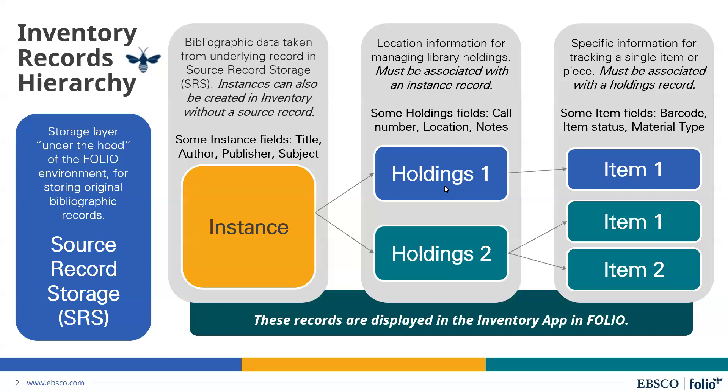Holdings records contain information such as location, call number, and volumes owned that enable staff to locate and manage library holdings for materials in all formats. Holdings records are associated with instance records, and in FOLIO you could have holdings records with underlying MARC records, or you may choose to create holdings records without any underlying MARC records.